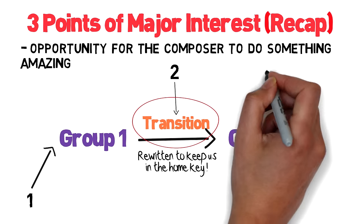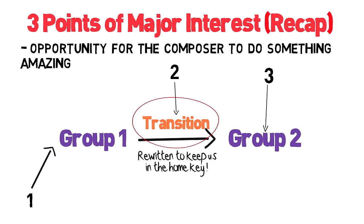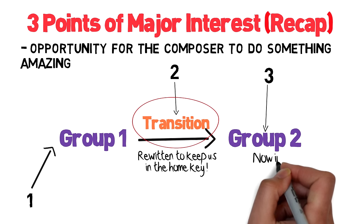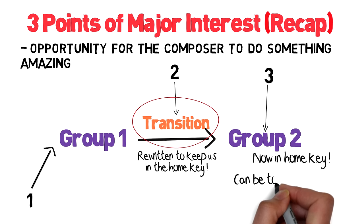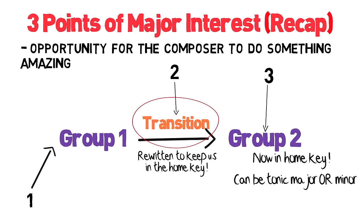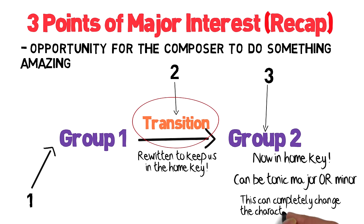The third interesting part is the second group and how the composer will alter it, if at all. Here Mozart changes the key from B-flat major to G minor. It would have been perfectly acceptable to just go to G major — that's allowed in sonata form — but Mozart takes it a step further and makes it minor, which completely changes the character of the theme to something more tragic. So it's a crucial moment in terms of the mood of the piece. The argument has resolved itself into tragedy, not positivity.